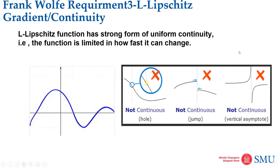The third one is Lipschitz gradient. The Lipschitz gradient is a kind of continuity — the partial derivative of the function should be continuous across the domain within the boundary. This one is continuous, but this one is not continuous. So this is the third requirement to use the Frank-Wolfe algorithm.